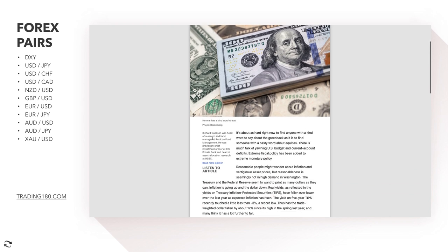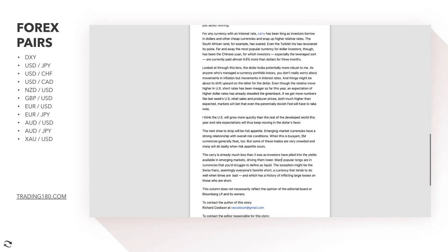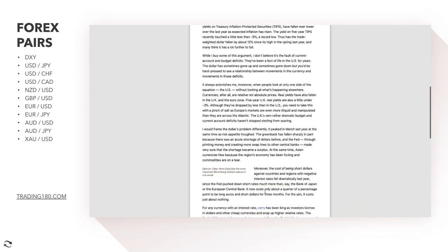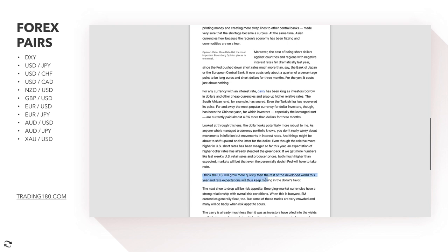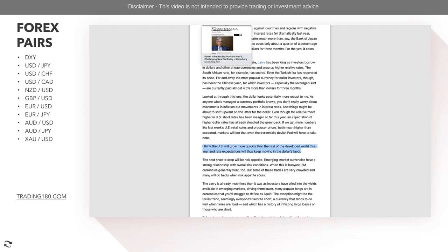In a Bloomberg article, 'Why the Dollar Is More Robust Than It Looks,' by Richard Cookson — former head of research at Rubicon Fund Management, previously chief investment officer at Citibank and head of asset allocation research at HSBC — he breaks down why the dollar looks more robust. The key takeaway is that the US will grow more quickly than the rest of the developed world this year, and rate expectations will keep moving in the dollar's favor.